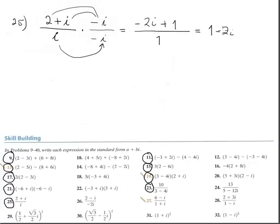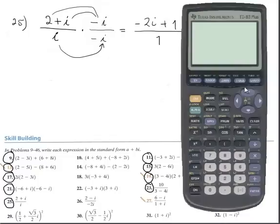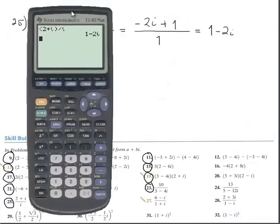Let's check it with the calculator. Calculator is parenthesis 2 plus i divided by i. 1 minus 2i is the answer.